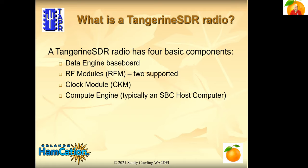So what are the components of the Tangerine SDR radio? It has four components: a data engine baseboard, kind of like a small motherboard; RF modules, with two sockets so you can use two of the same or two different ones; a socket for a clock module, with plans for one particular type currently but open to future modules depending on performance required; and a compute engine, which is typically a single board computer, a host computer, or a remote computer — integral to the Tangerine SDR radio as a system.